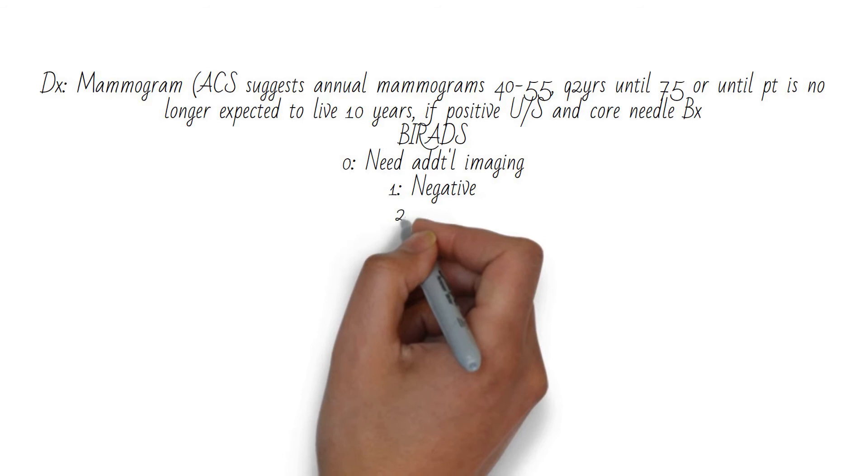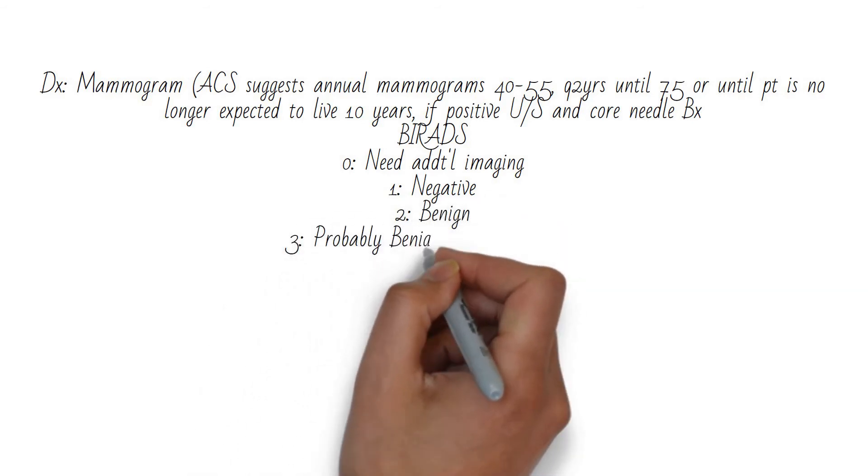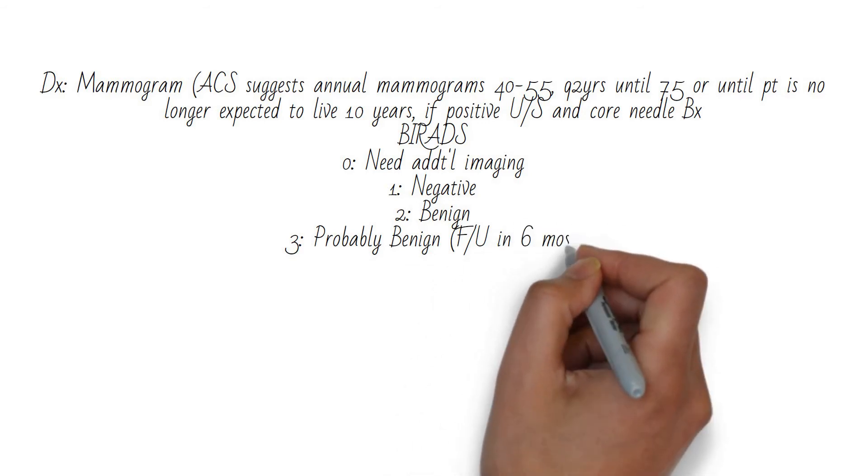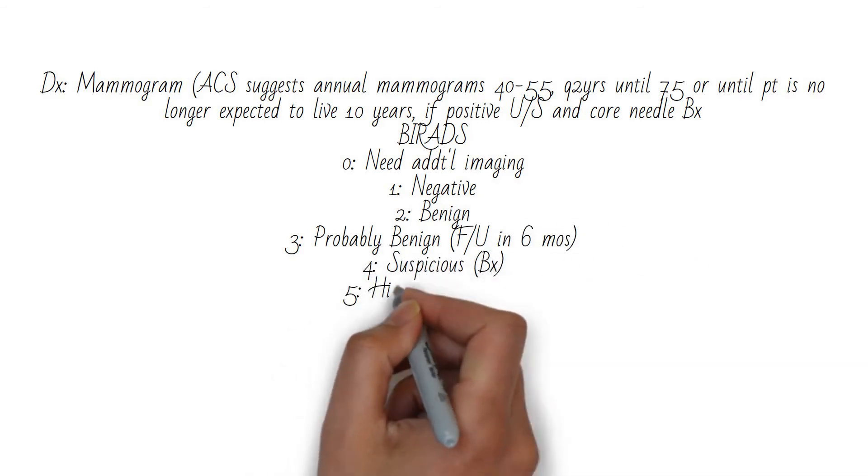The BIRAD scale is used, ranging from 1 to 6, with 1 being negative and 6 being a biopsy-proven malignancy, and then 0 meaning needs additional imaging.